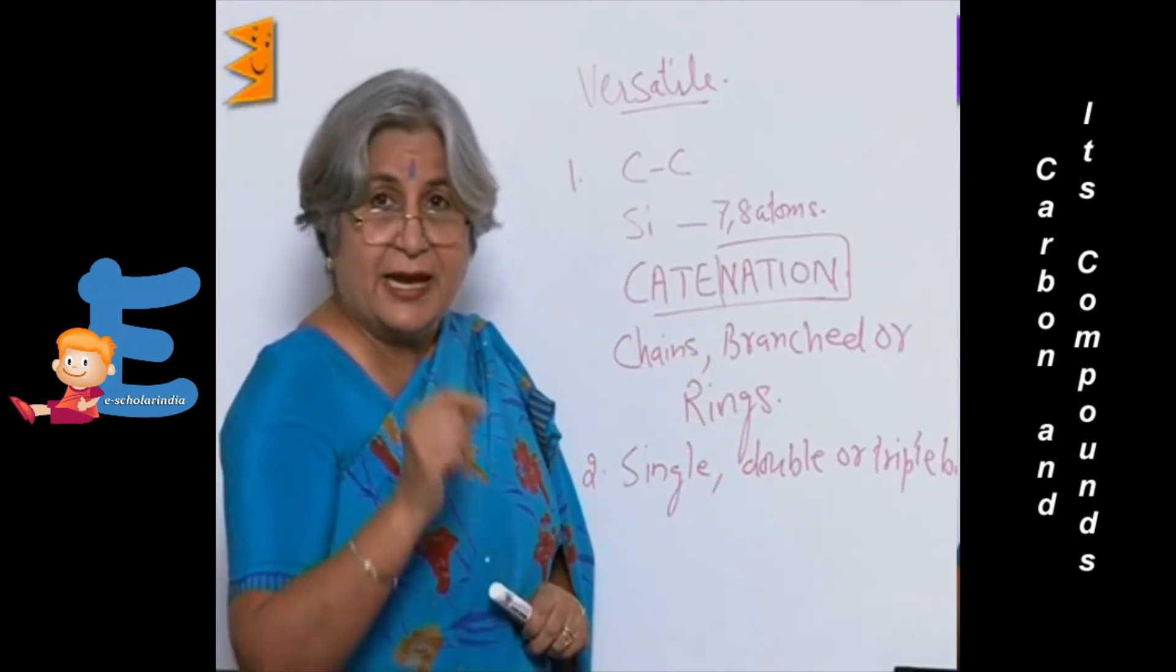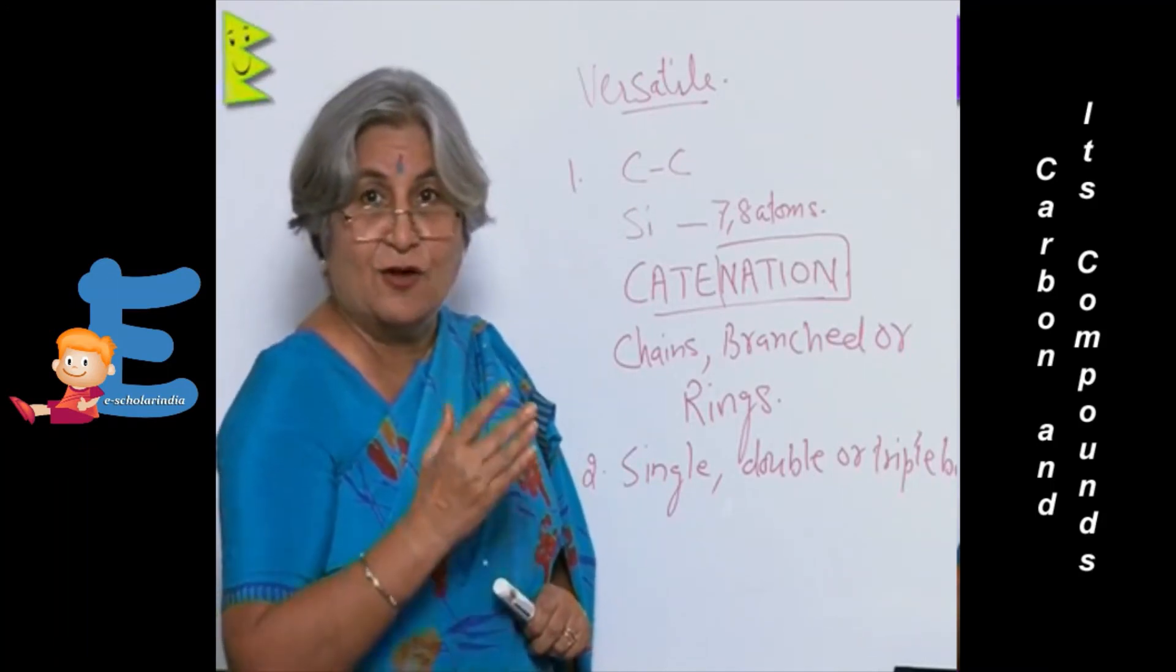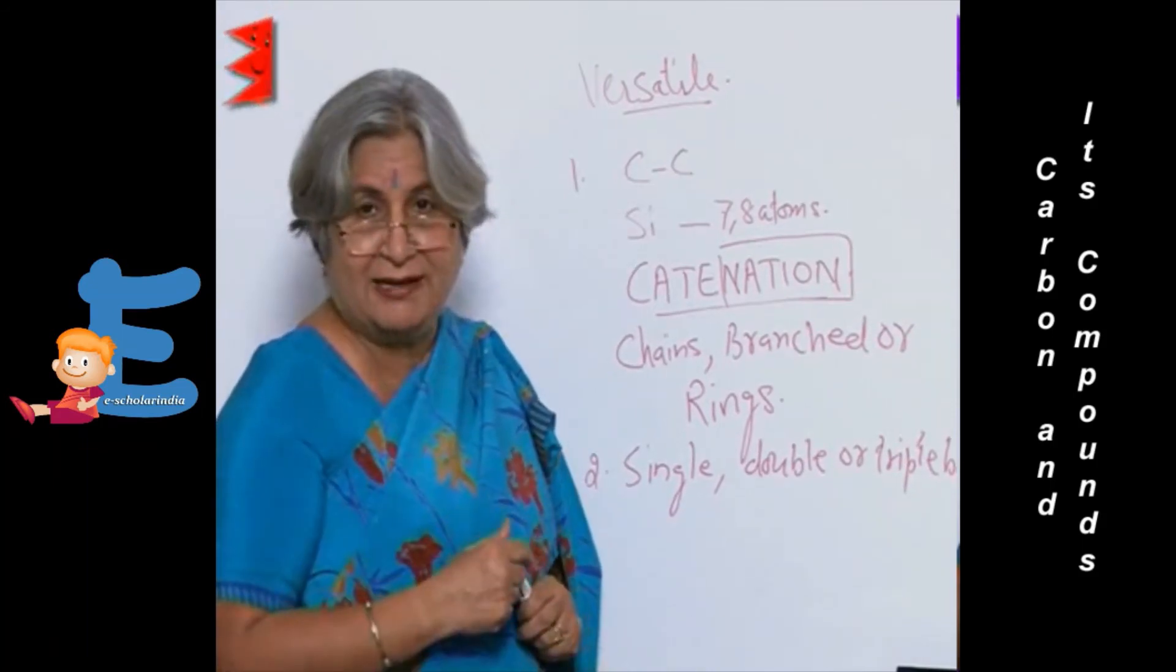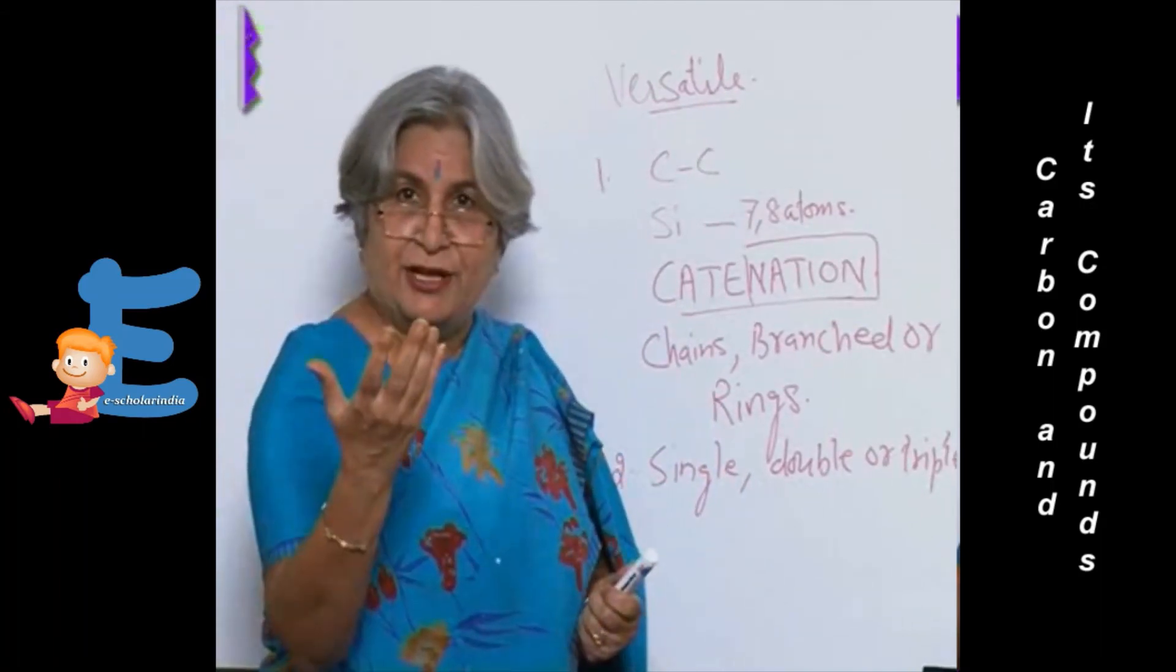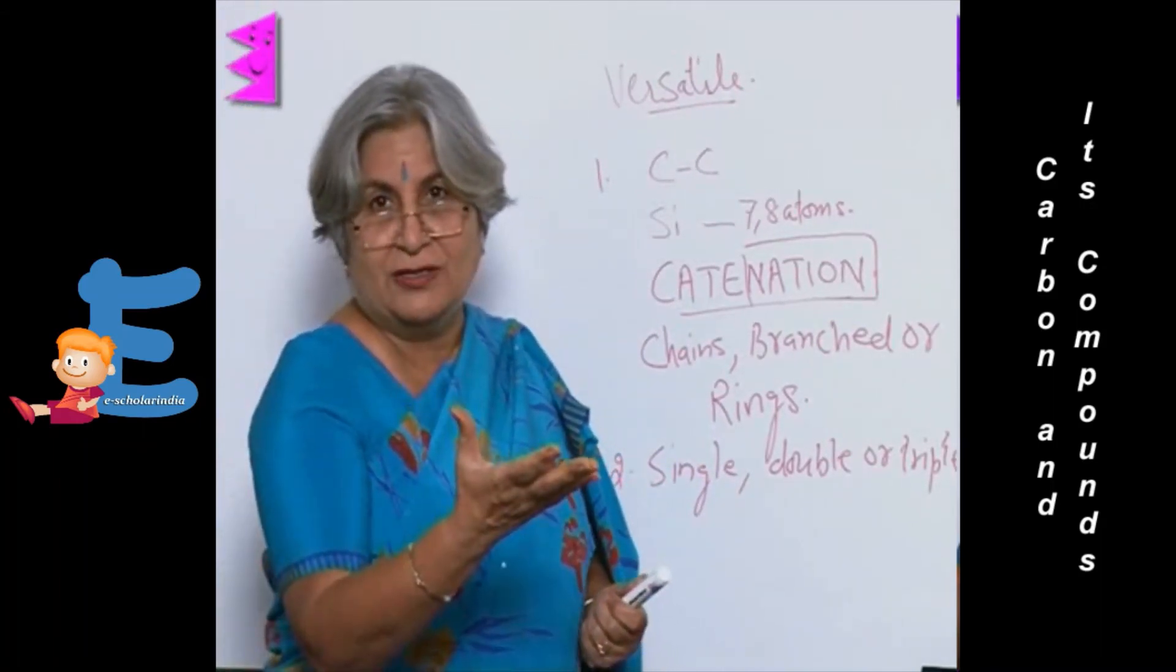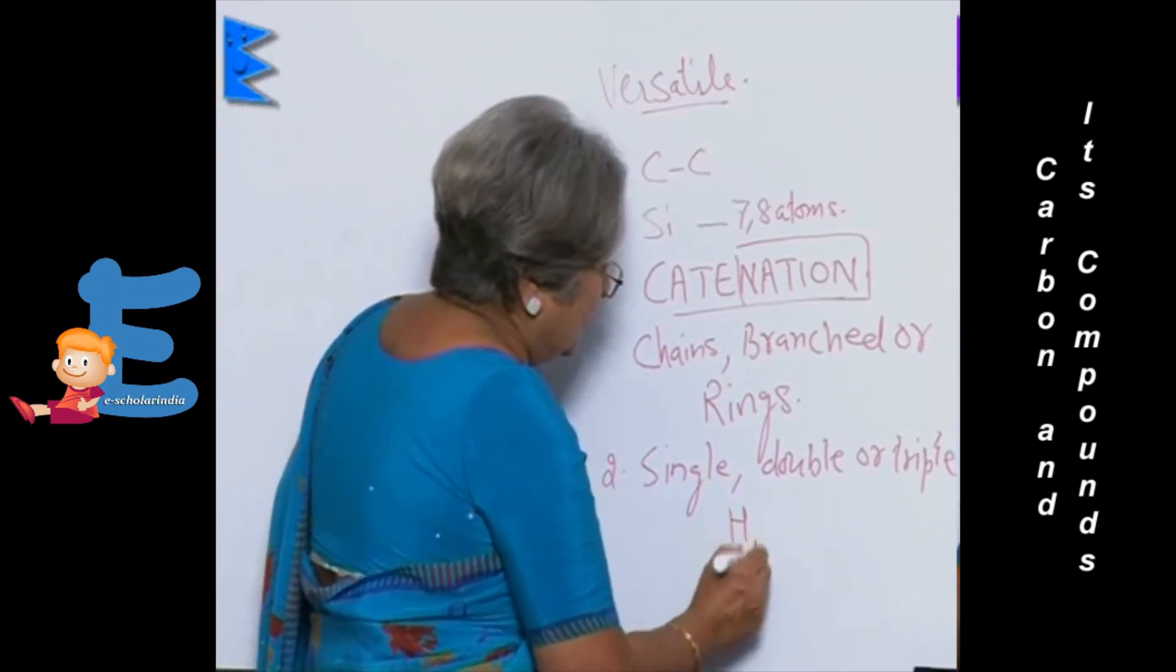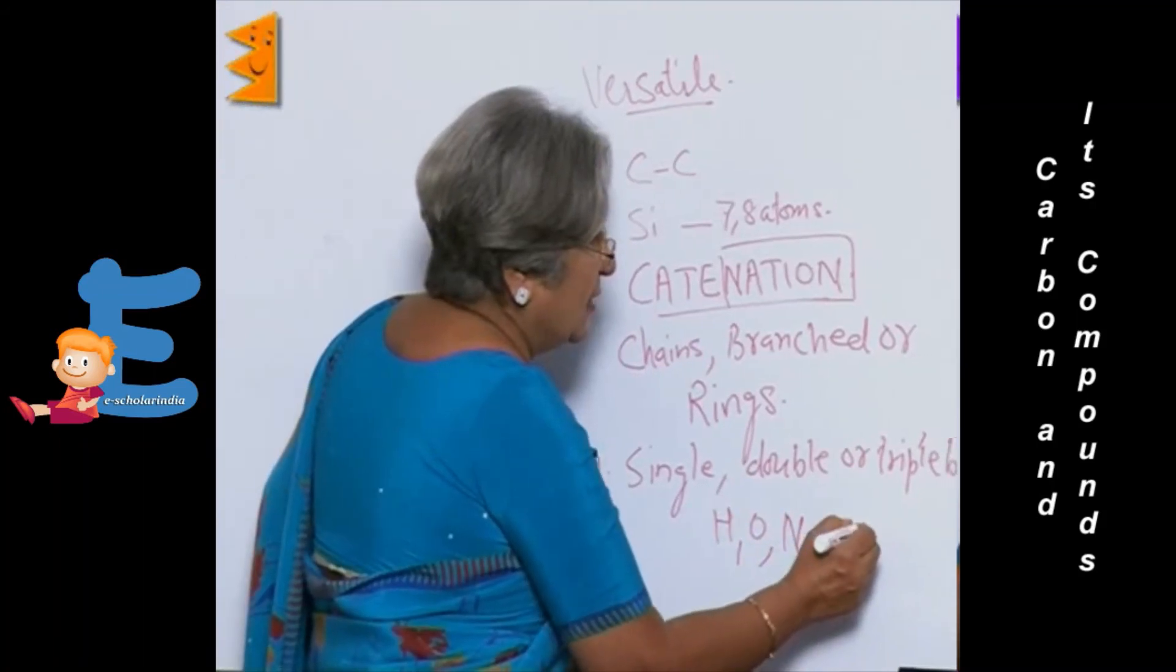Another thing is that it cannot not only form a bond with carbon, it can also form bonds with others. Once again, just like Indians—not only they have a bond with each other, whichever country they go, they form bonds. So it can form bond with hydrogen, oxygen, nitrogen, sulfur, or halogens.